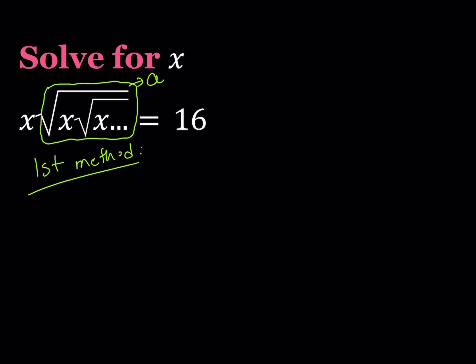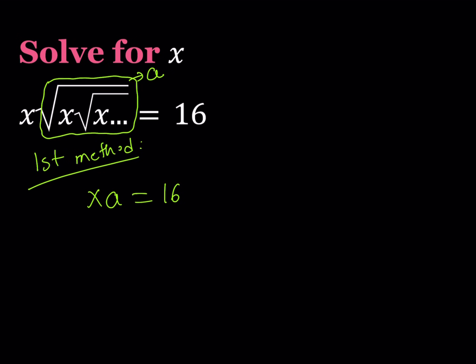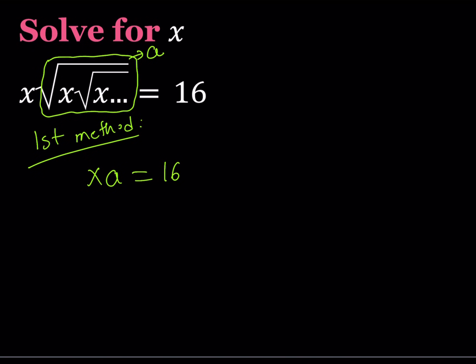So now we get an equation from here, right? We get xa equals 16. It's kind of like the product of two numbers is equal to 16. Great. So I do need another equation so I can make it a system of two equations, right? Then I can solve for each variable.